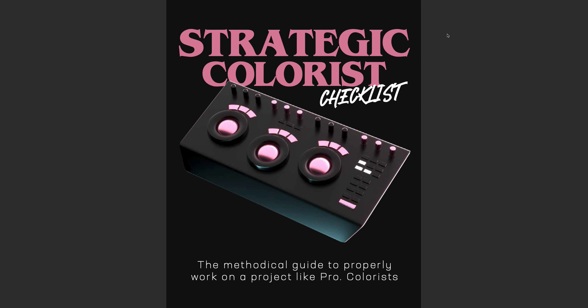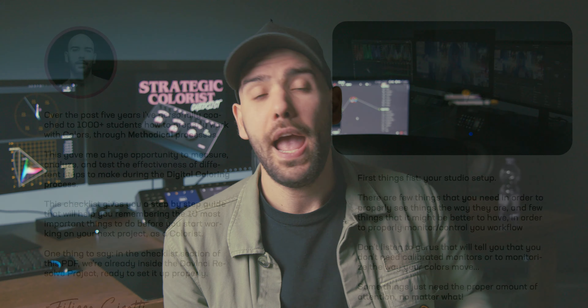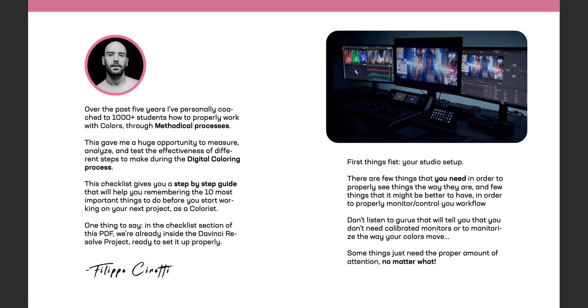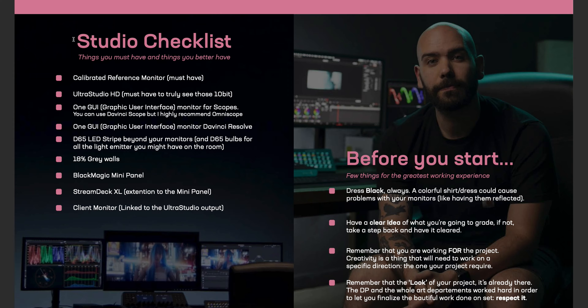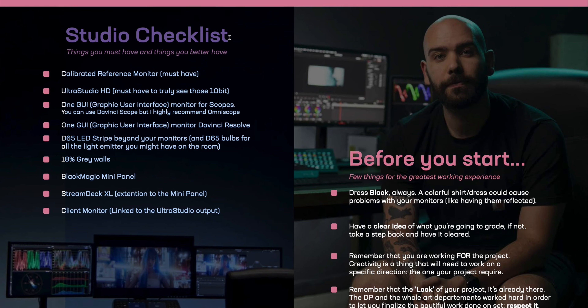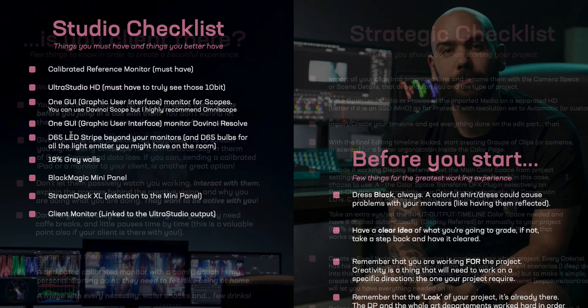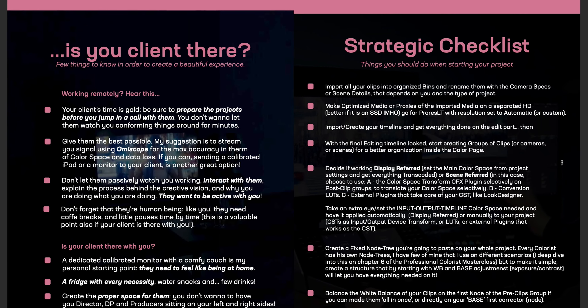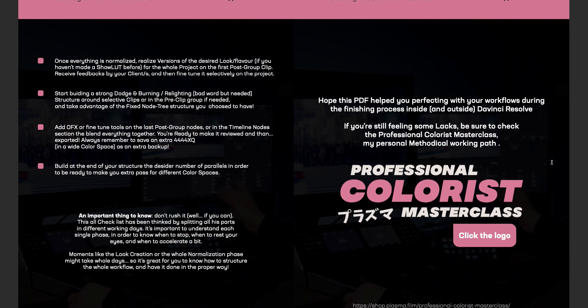So a month ago, I released a free PDF called the Strategic Colorist Checklist. This is a free PDF that will help you a lot during a working pipeline, whatever you'll be working into — commercial, music videos, whatever — there are things that you must know. I organized this all as a checklist, because if you're starting right now or you've been working for a while and you're still wandering around YouTube tutorials, you might need to be really methodical and organized. With this checklist, you can just check whatever you will be doing, and over time you won't need it anymore — it will become part of you.